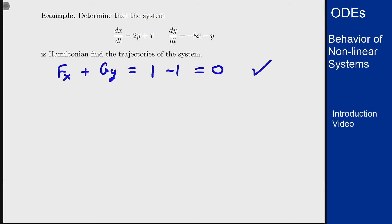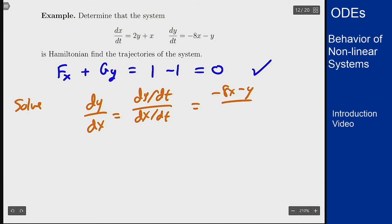Now if I wanted to find trajectories, I could either solve dy/dx is dy/dt over dx/dt, which is negative 8x minus y over 2y plus x. Try to solve this out, set up what's going on here, which I can try to do and see what happens.